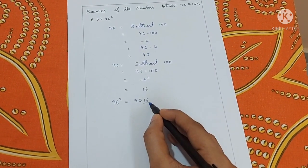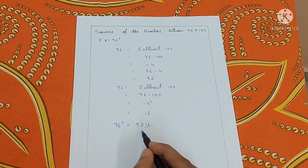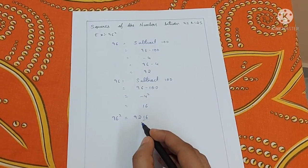Take the 16 as the last 2 digits number. Now this is the required number, which is 96 square equals 9216.